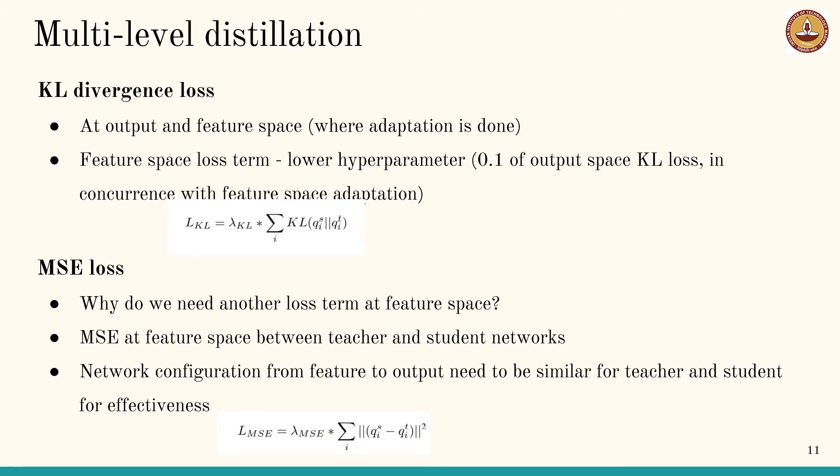For MSE loss: while the output space captures the crux of knowledge — scene layout, context, etc. — needed for distillation, the high-dimensional feature space encodes complex representations and can prove useful too. This leads us to impose a mean squared error loss between the feature maps of the two networks. These feature maps correspond to the level at which multi-level domain adaptation is done.